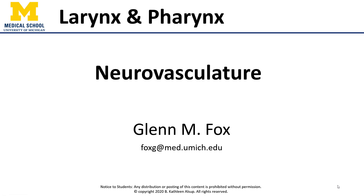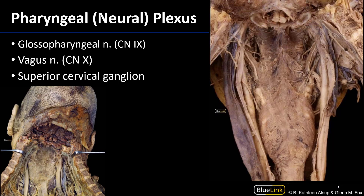Let's talk about the neurovasculature of the larynx and the pharynx. Let's begin with the pharyngeal plexus, which is a nervous plexus serving the pharynx and the muscles of the soft palate. The pharyngeal plexus gets input from three sources. There are somatic sensory fibers granted from the glossopharyngeal nerve, cranial nerve 9, which we can see here sharing its posterior association with the stylopharyngeus muscle.